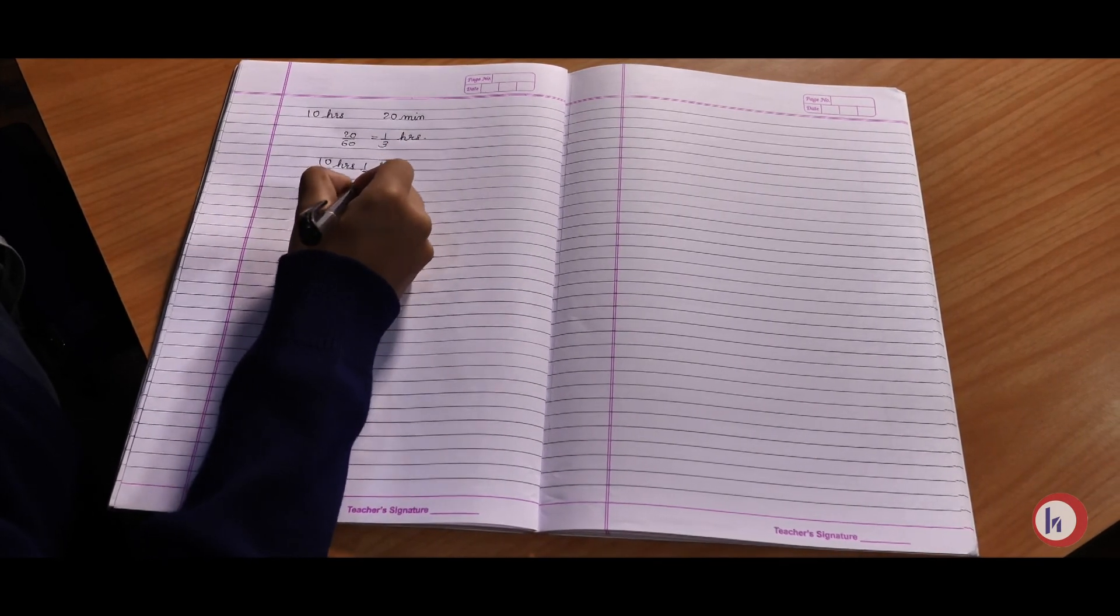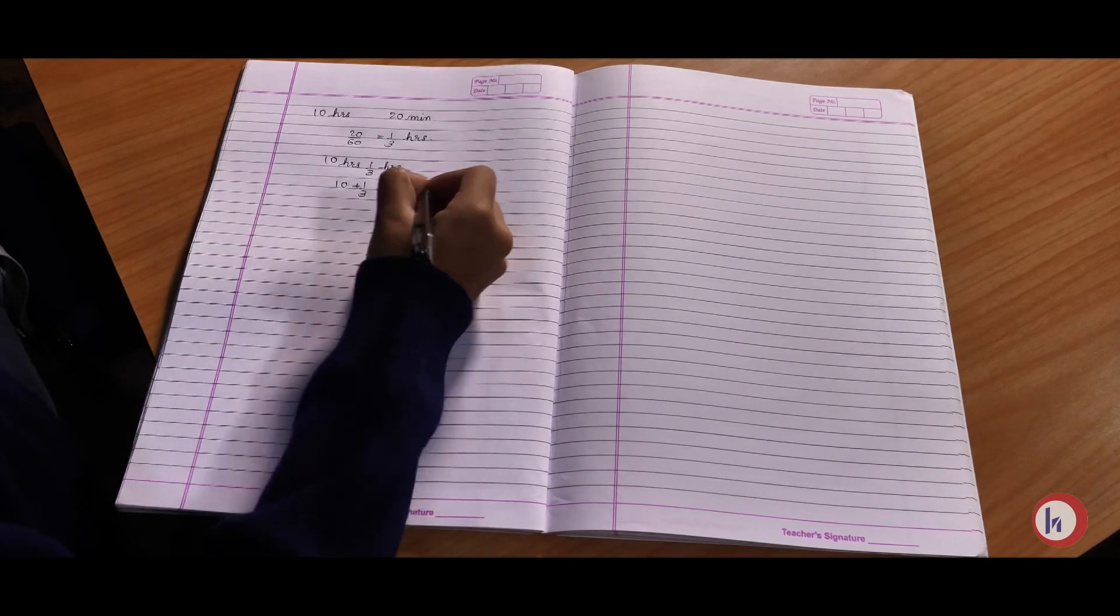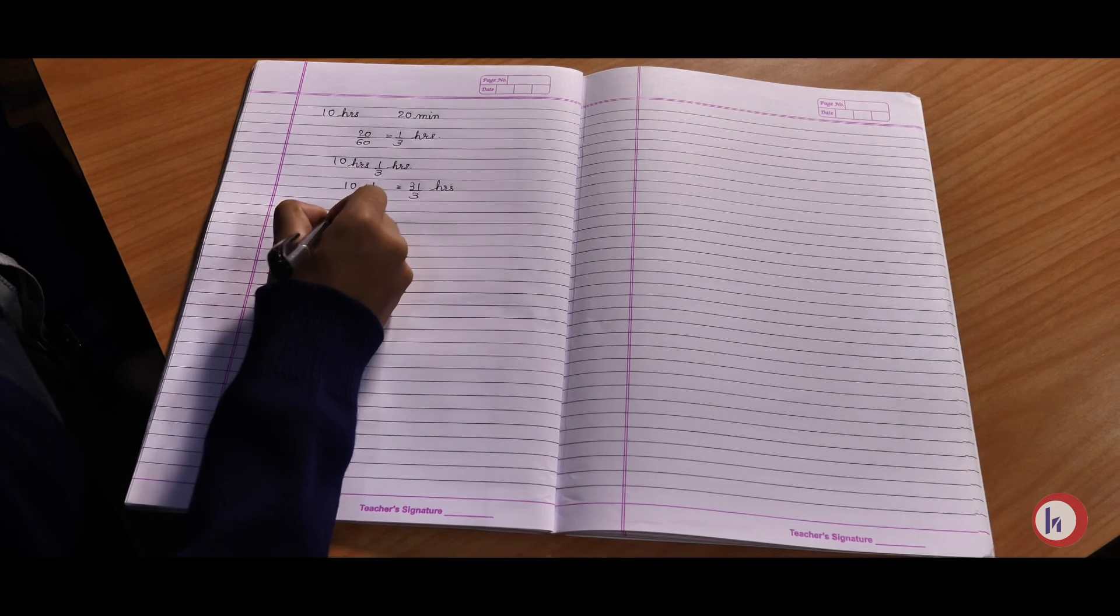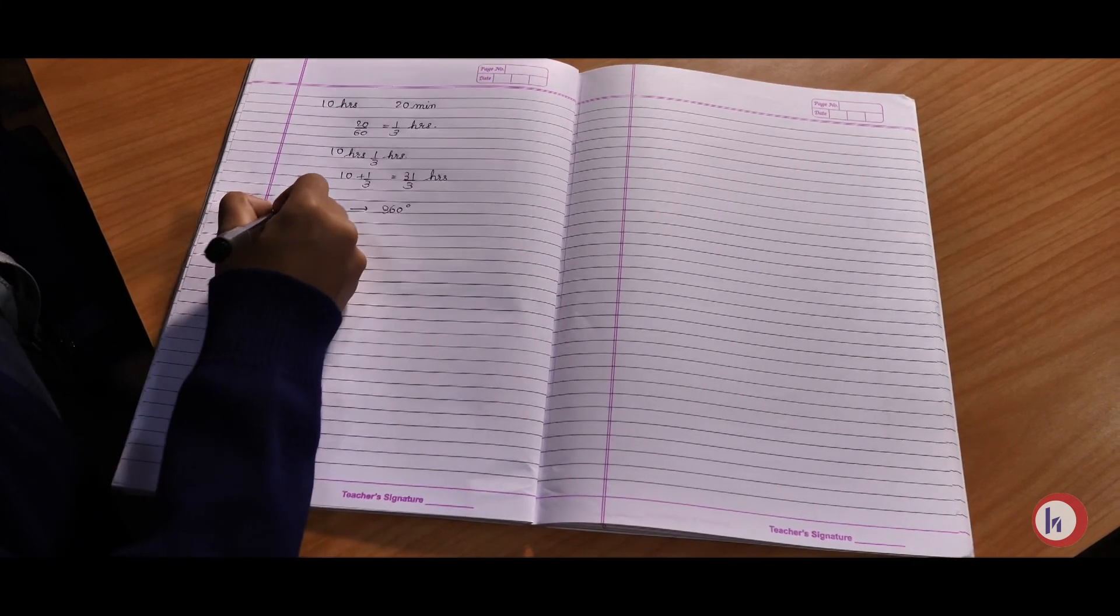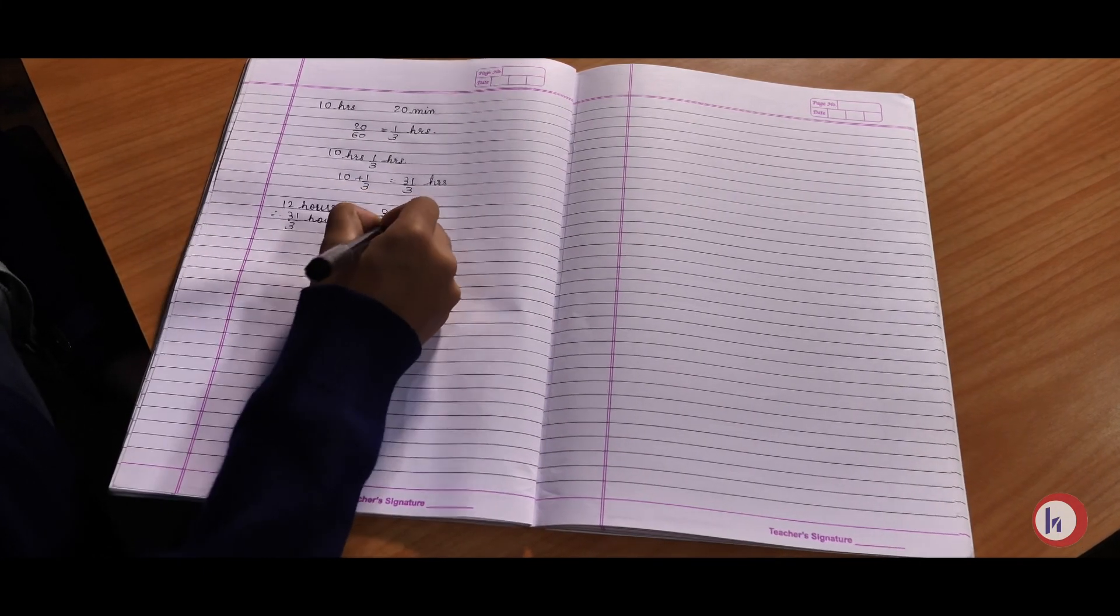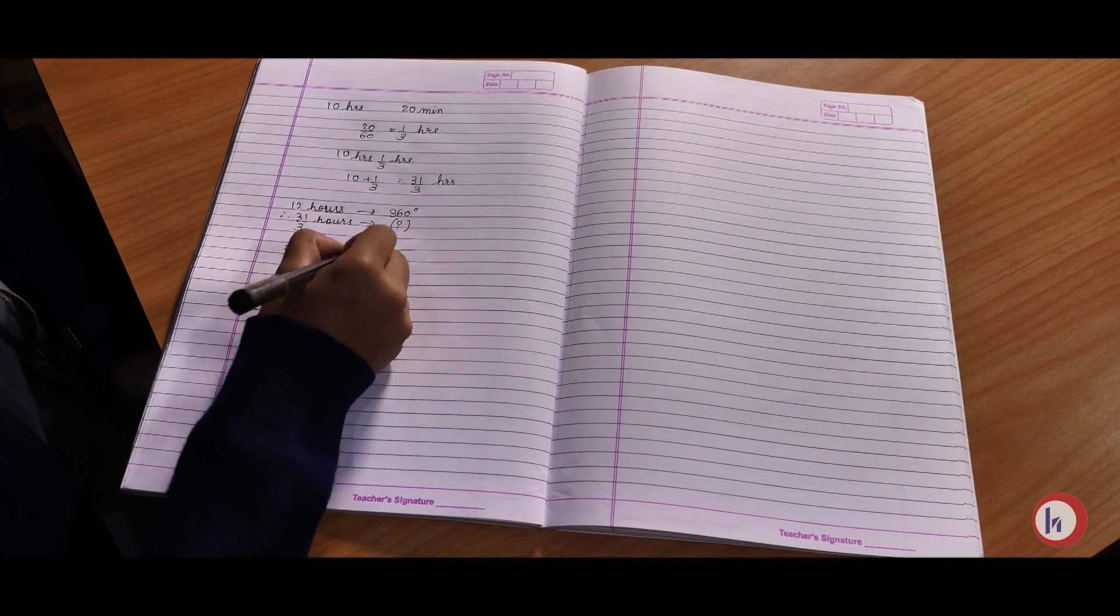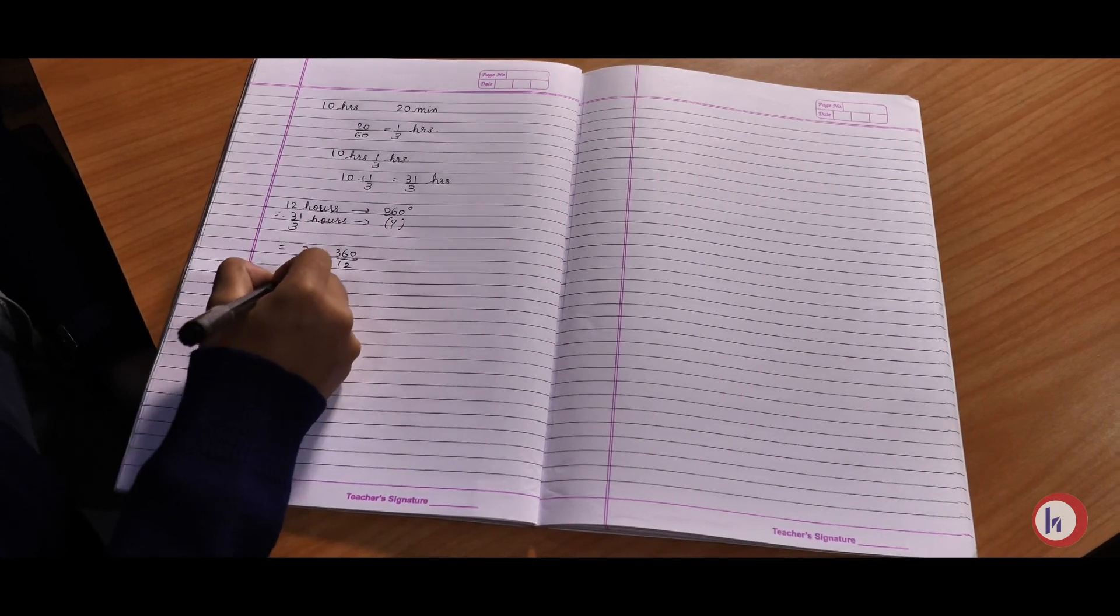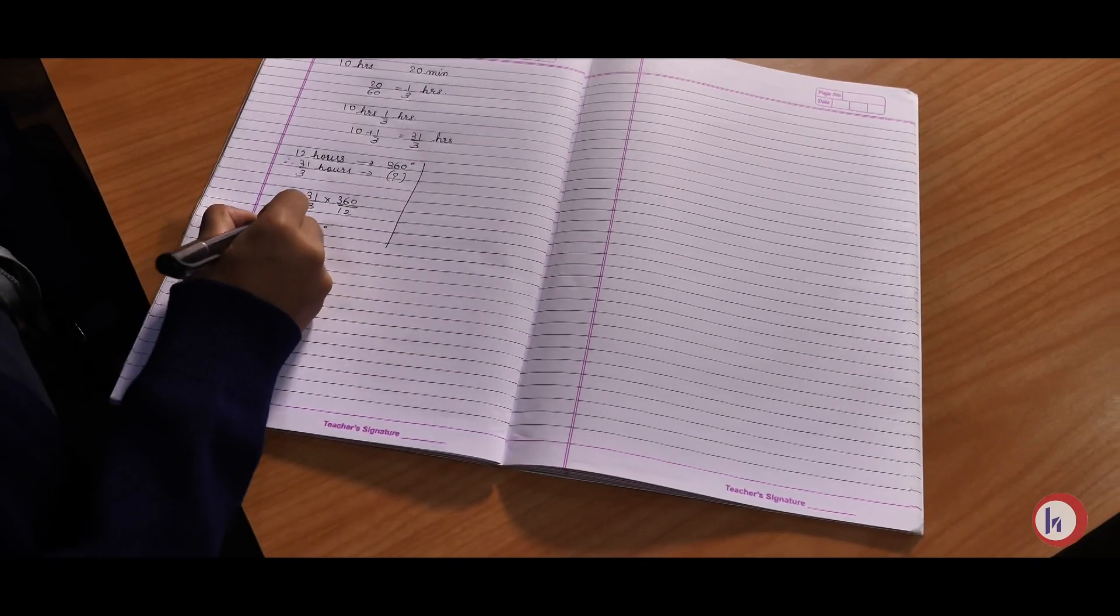Now we will take LCM. Therefore 31 upon 3 hours. Now we know that 12 hours equals to 360 degrees. Therefore 31 upon 3 hours will be how much. So 31 upon 3 into 360 upon 12 equals to 310 degrees. We will consider it as X.